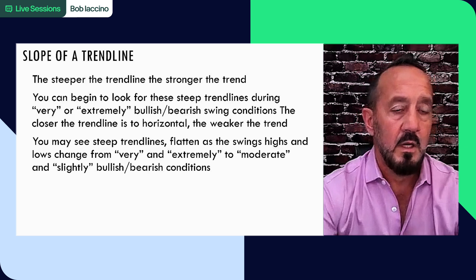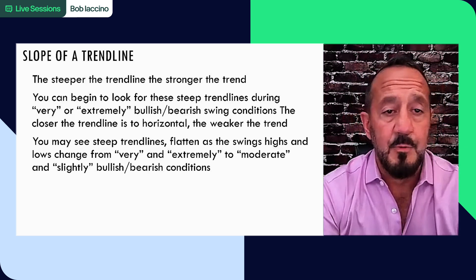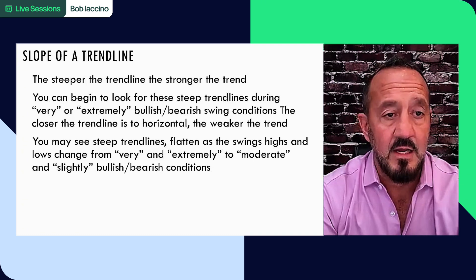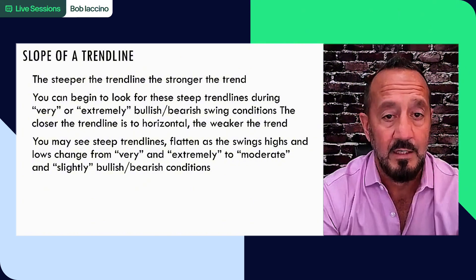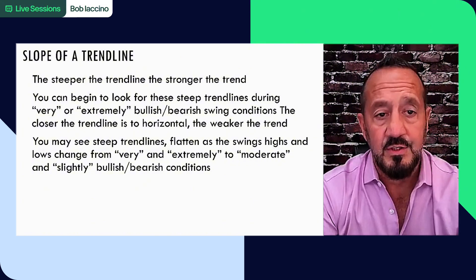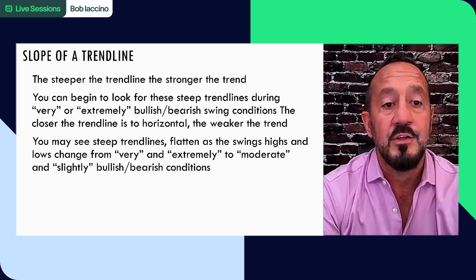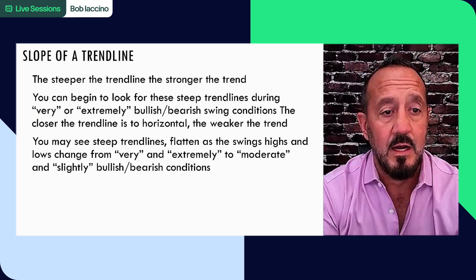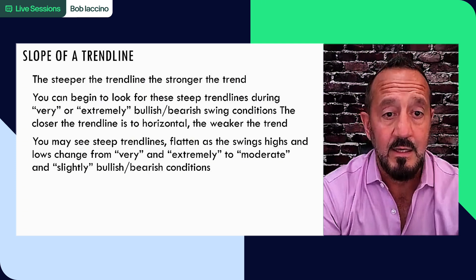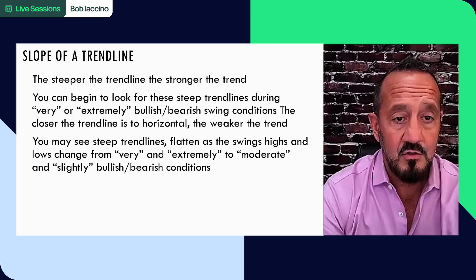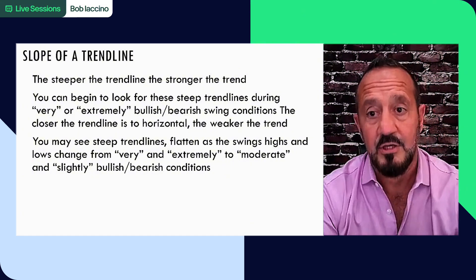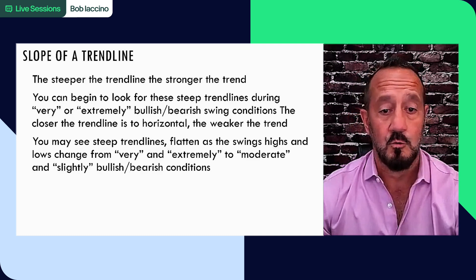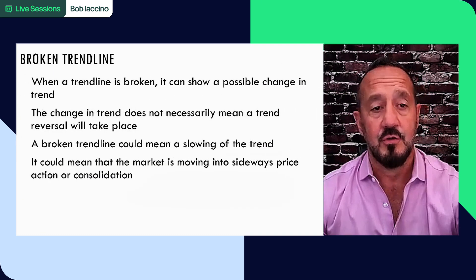You might adjust the angle of the downward line connecting swing lows, but it does not adjust the steepness of the trend because the trend is defined by the upper line, not the lower line. Slope of a trend line is important. The steeper the trend line, the stronger the trend. You could begin to look for these steep trend lines during very or extremely bullish and bearish swing conditions. And the closer the trend line is to horizontal, the weaker the trend.